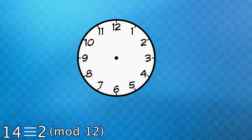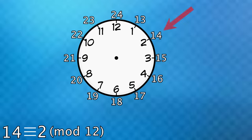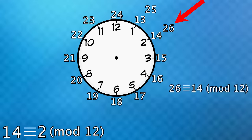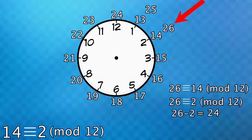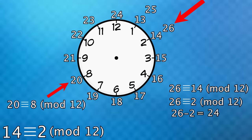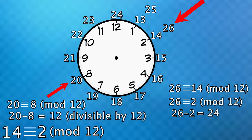The visual way to think about this is if the integers continue to wrap around a clock, fourteen and two would land at the same place. In fact, if we kept going, twenty-six would also land there, which means twenty-six is congruent to fourteen as well as two modulo twelve. Then algebraically, the reason twenty-six is congruent to two mod twelve is because if you subtract twenty-six and two, the result is divisible by twelve. Or you can see that twenty is congruent to eight mod twelve, since twenty minus eight is divisible by twelve. Same goes for all these pairs of numbers on the clock.